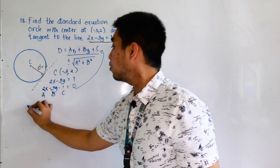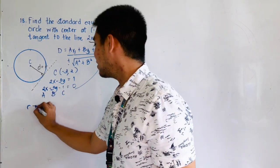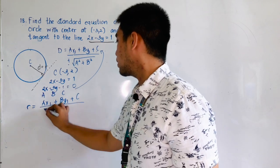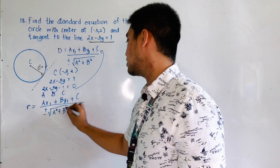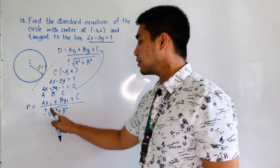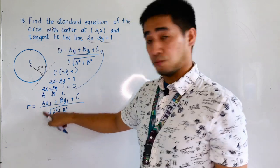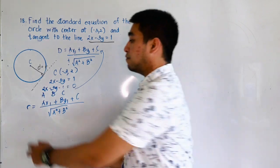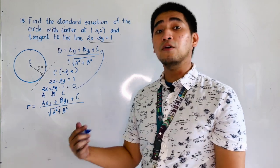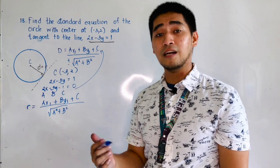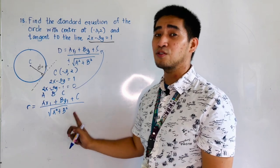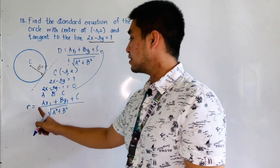Therefore, d — or let's say r — is equal to ax₁ plus by₁ plus c, all over the square root of a squared plus b squared. You may ask how to handle the plus or minus in the denominator. We can simply use the absolute value: if the result for r is negative, take its absolute value, because radius is a distance and all distances are positive.